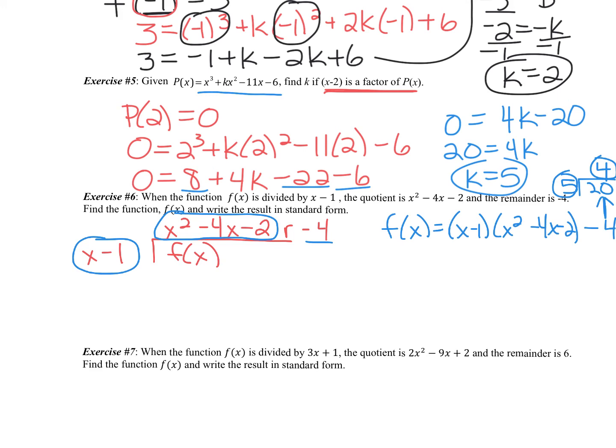So this one's in standard form, which just basically means we have to simplify, which means multiply this out, and then we'll subtract 4 at the end. So f of x equals x cubed minus 4x squared minus 2x minus x squared plus 4x plus 2 minus 4, giving me f of x equals x cubed minus 5x squared plus 2x minus 2.